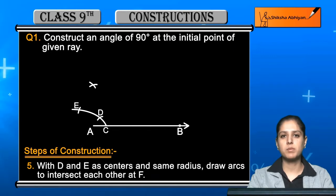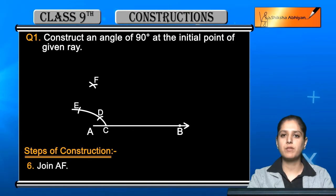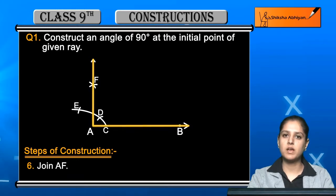Jo cross type ban jayega aapke paas, jiske upar aap likhenge point F, isko humne F ka naam diya hai. So now the last step is to join AF. AF ko aap join kar denge, ek line se, scale and pencil ko use karte hue. Aap A aur F ko join karke jo aapke paas angle banega, FAB, this is the required angle of 90 degrees. Ye angle initial point A pe ban raha hai aur agar aap check karenge apne protractor use karke to usme aap dekhenge ki ye bilkul perfect 90 degree ka angle hai.